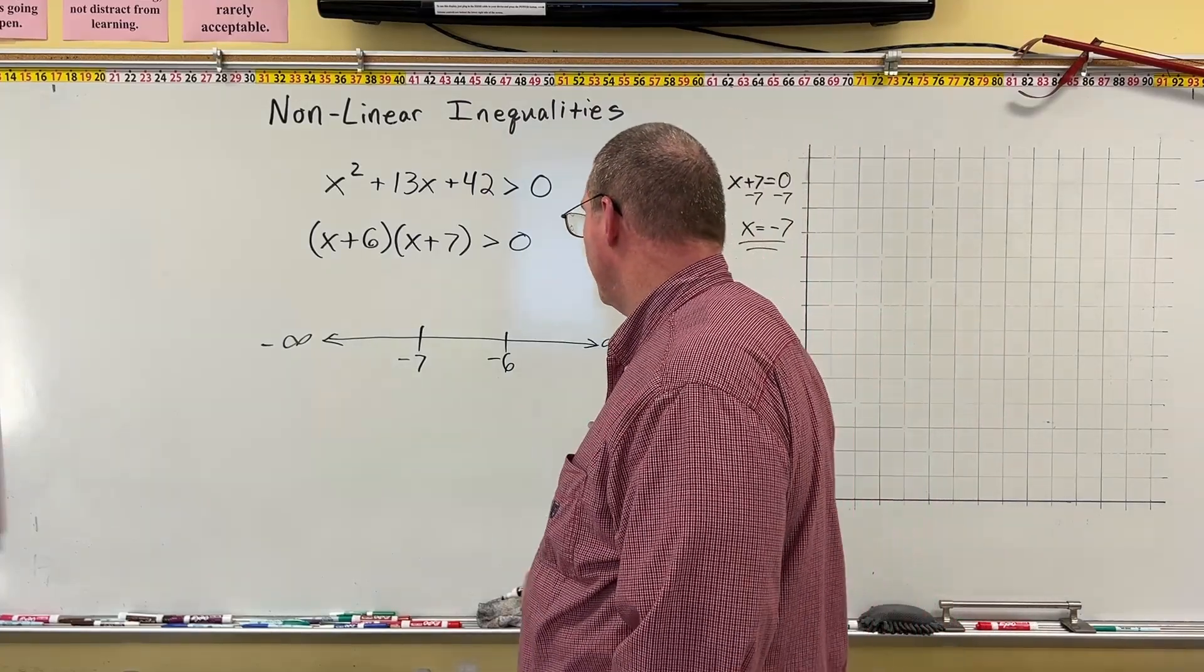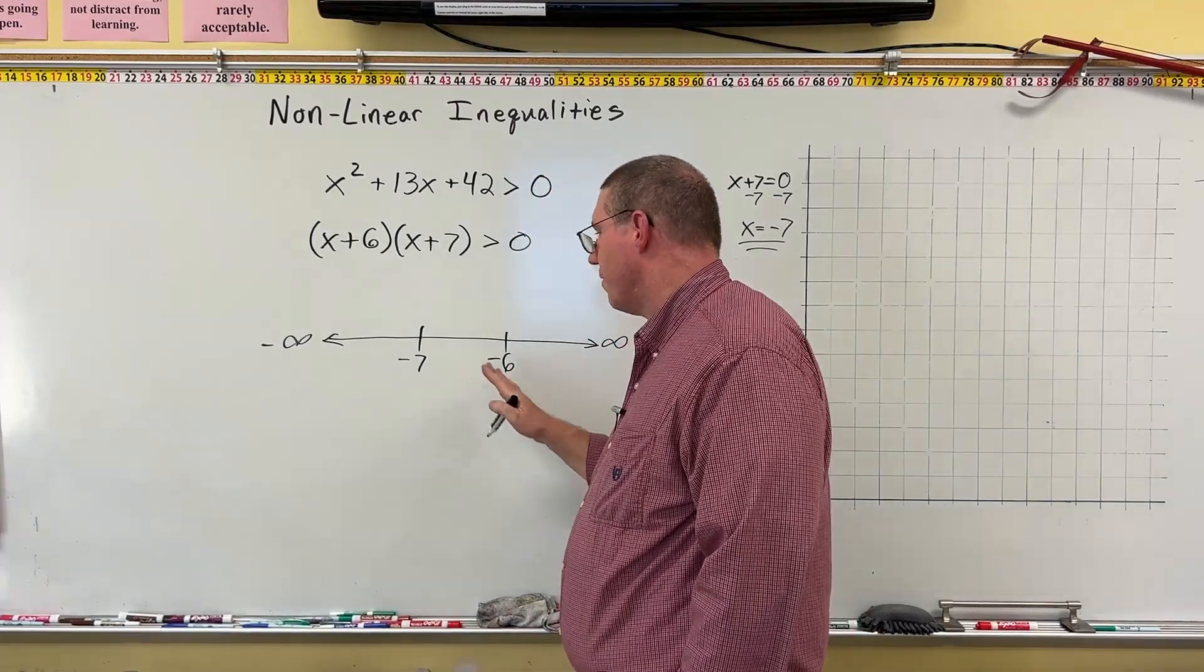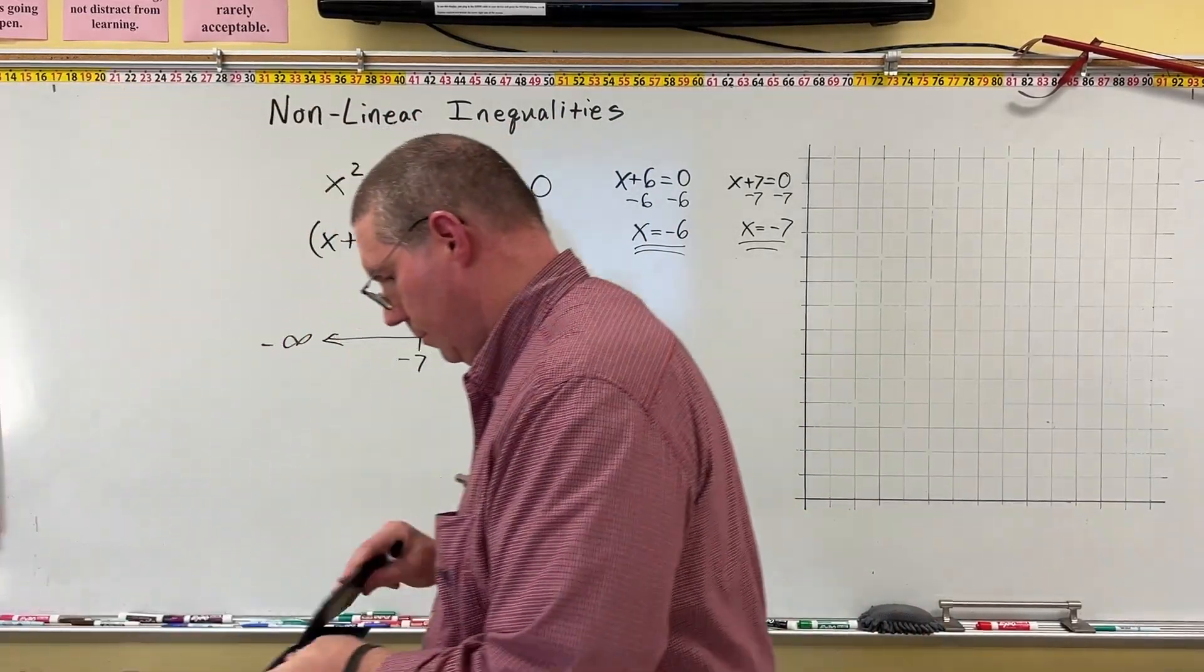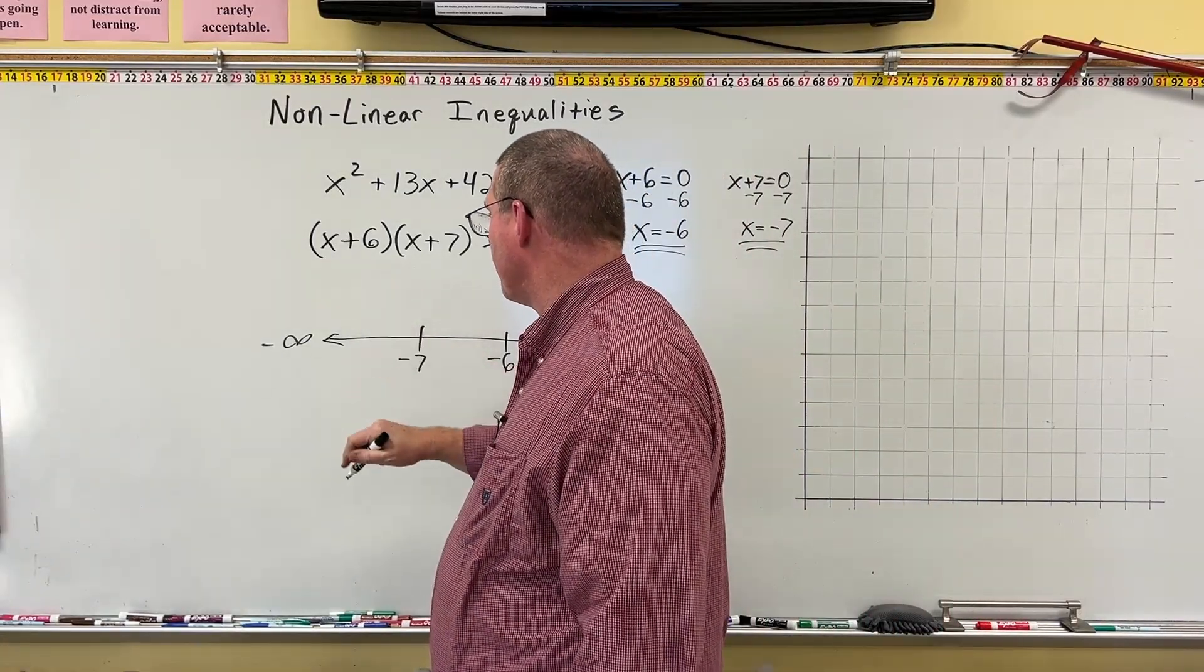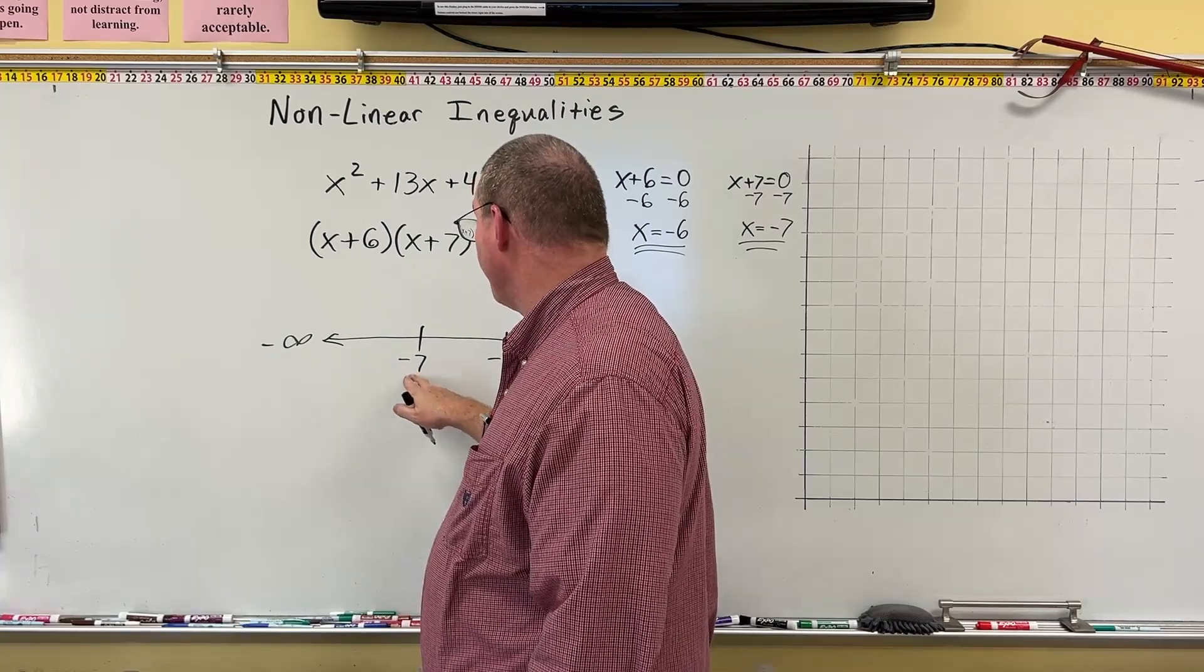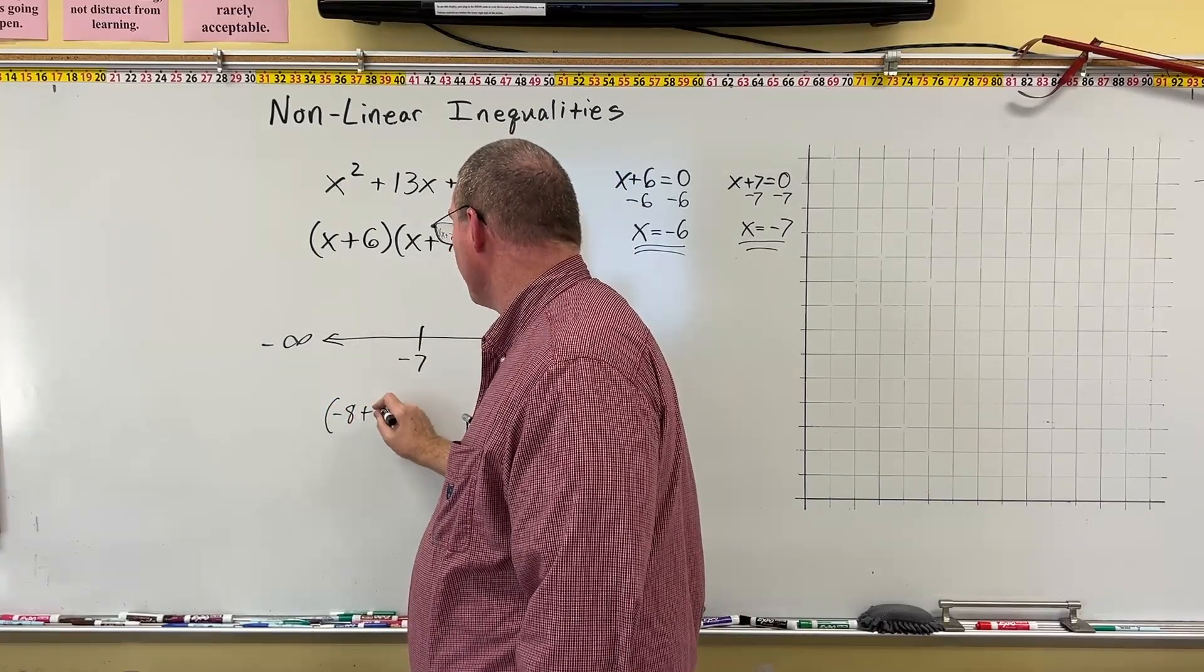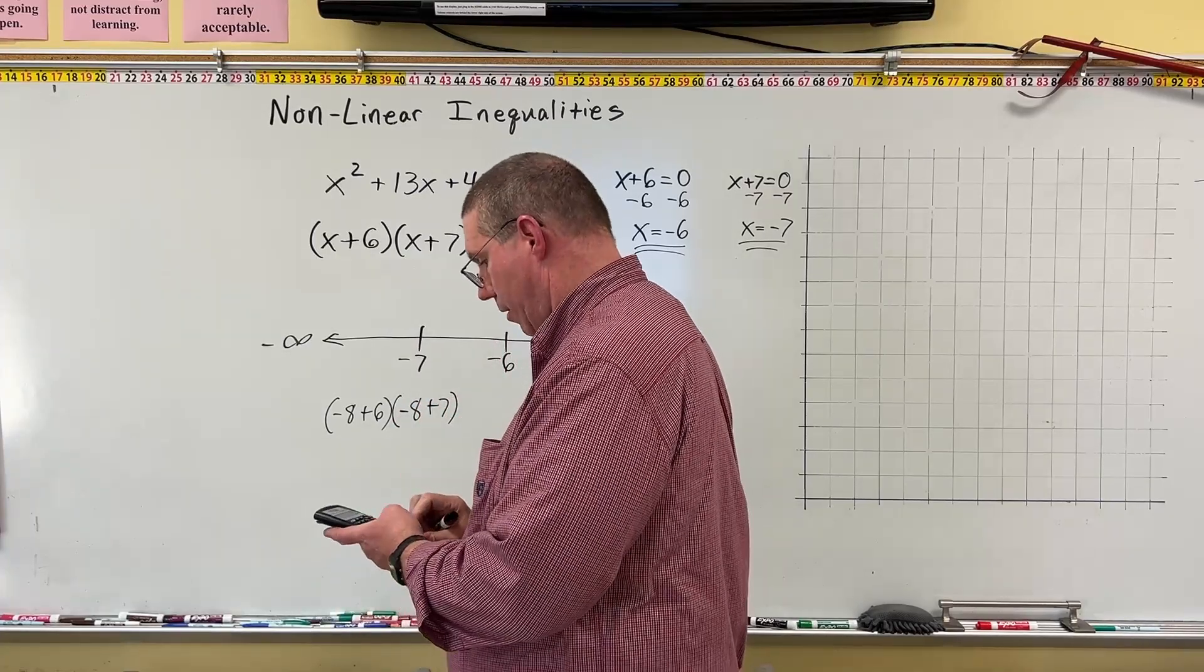Now this could be a little challenging, because a number between negative 7 and negative 6 is going to have to be a decimal like negative 6.5. But I can use a calculator for this. I'll go ahead and grab a calculator and get ready for that. So I'm going to test to find out whether this is positive or negative. I'm going to get a number that's less than negative 7, so how about negative 8. And watch what I can do. I can actually put it in here. I can do negative 8 plus 6 times negative 8 plus 7.